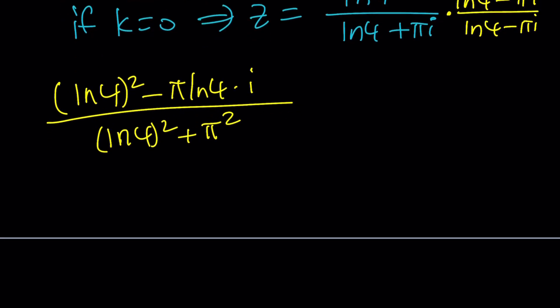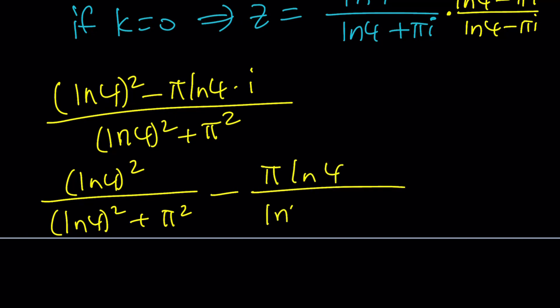So, it's going to be negative i squared and plus 1. Okay? So, you can also separate this and write it as ln 4 squared if you want. Over ln 4 squared plus pi squared minus pi ln 4 over ln 4 squared plus pi squared times i.